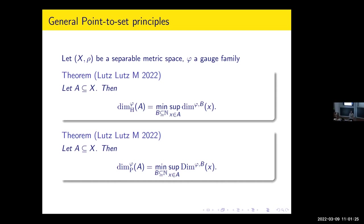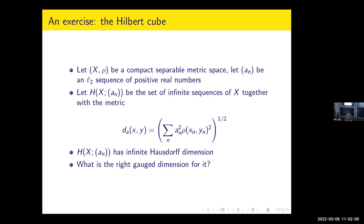This makes it more interesting to know more about these oracles in the point-to-set principle. Let's play a game and look at an example of a separable space and try to see how you would find out things about it. For instance, let's look at the Hilbert cube — this was a new example for us. Let's try to see which is the right gauge function to deal with it and what kind of geometric measure analysis we can do.